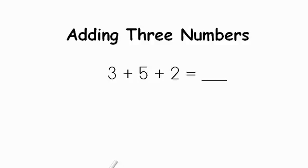Okay here we have another one. Three plus five plus two. So the first step is we add the first two numbers. So three plus five. Start with the larger number five, count on three more. What do you get? That's right, you get eight.